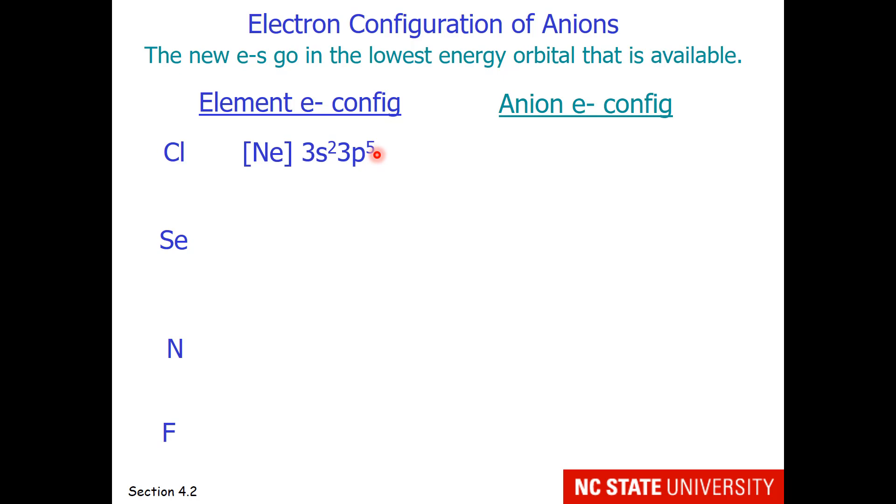Clearly we have room for just one more electron. So this could be chloride with a negative 1 charge. And we could write neon 3s2, 3p6, but I think it's easier to just write argon.